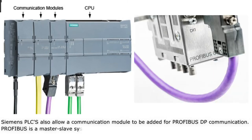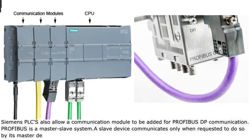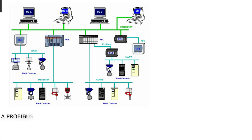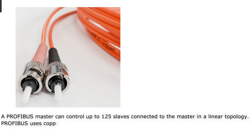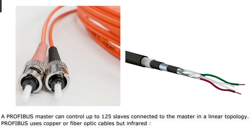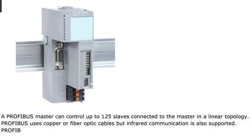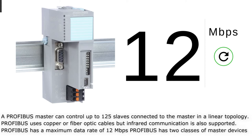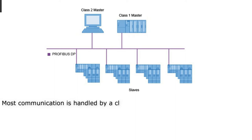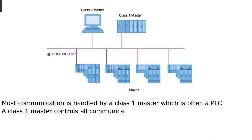Profibus is a master-slave system; a slave device communicates only when requested by its master device. A Profibus master can control up to 125 slaves connected in a linear topology. Profibus uses copper or fiber optic cables, but infrared communication is also supported. Profibus has a maximum data rate of 12 Mbps. Profibus has two classes of master devices. Most communication is handled by a class 1 master, which is often a PLC that controls all communication with its slaves.